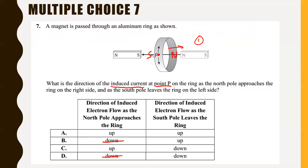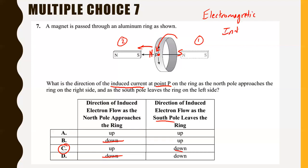For part two, the south pole is leaving the ring. The ring opposes this too — it doesn't want the magnet to leave. So it generates a north pole to attract the south pole back, meaning the magnetic field now points to the left. Using the left hand rule with thumb pointing left, your fingers curl over and down. So the current at point P goes downward as the south pole leaves. The answer is C. Electromagnetic induction always opposes the motion of the magnet generating the induced current.